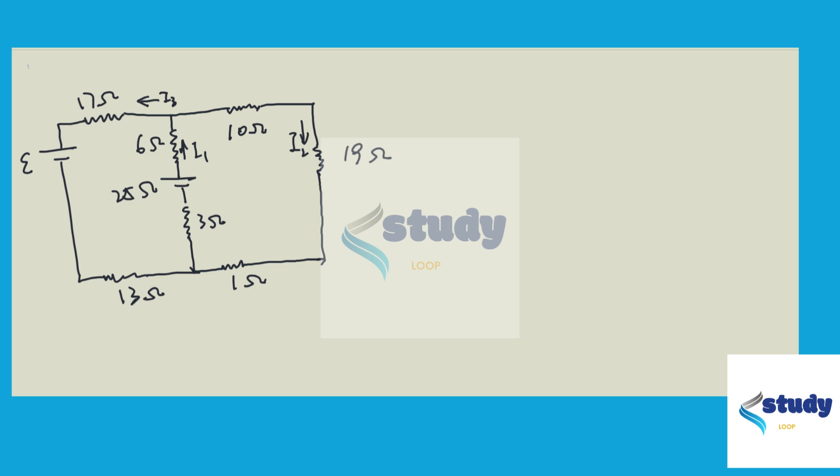So in this question, first what we can do is combine the two 20-ohm resistors together because they are in parallel and they have the same resistance. So the total resistance of these two resistors is going to be 10-ohm here.